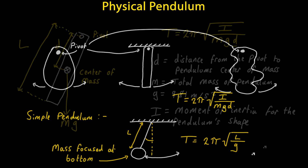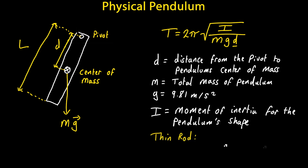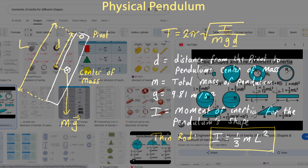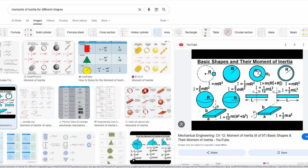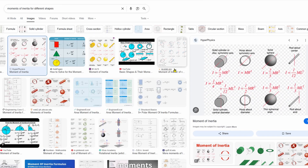Now the moment of inertia for a particular object that rotates around some kind of axis tells us how difficult it is to make the object spin around this axis. For a thin rod, which will be our physical pendulum for this video, the pivot is at the end at the top. The moment of inertia for a rod where the pivot is at one end is equal to one third times the mass of the pendulum times the length of the pendulum squared. This value of I would be different for a different shape or if the pivot was in a different position. We can either look up the moment of inertia for different shapes or we can use calculus.